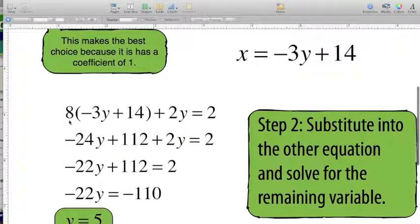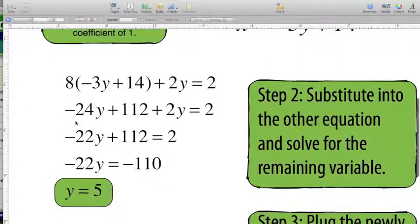You can see the work. It's 8 and this is where x used to be, but now we've replaced it with what we solved it for before. Just like we've been practicing, we're going to do order of operations. We're going to make sure that we multiply and distribute properly and then collect like terms. So I distribute my 8 to both these values and that's going to give me negative 24y plus 112 plus 2y equals positive 2.